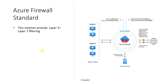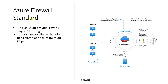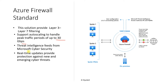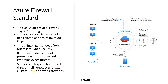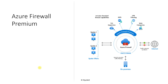Azure Firewall Standard provides Layer 3 and Layer 4 filtering and supports auto-scaling up to 300 Gbps, compared to only 250 Mbps for Basic. It includes threat intelligence feeds from Microsoft with real-time updates and protection against new and emerging cyber threats. It also supports enterprise features like DNS proxy, custom DNS, web categories, and threat intelligence.